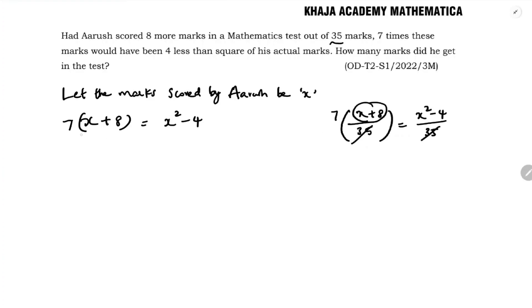So you can write 7 times (x+8) equals x² minus 4. If we simplify this further: 7x plus 56 equals x² minus 4. So x² minus 4 minus 7x minus 56 equals 0, giving x² minus 7x minus 60 equals 0.